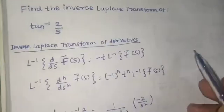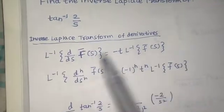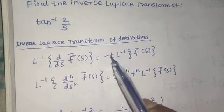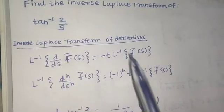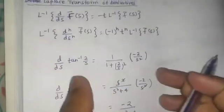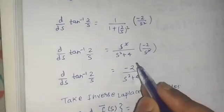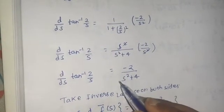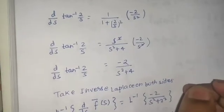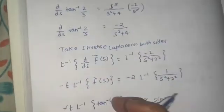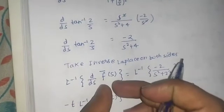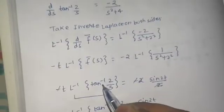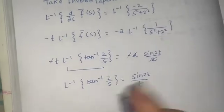So this t comes to the right-hand side. It's a very simple question if you know the rule: the Laplace inverse of a derivative — if it's the first derivative — multiply by minus t and take Laplace inverse of whatever is inside. We found the first derivative, got a standard form on the right-hand side, applied the rule on the left-hand side, and arrived at the final answer: sin(2t) divided by t.